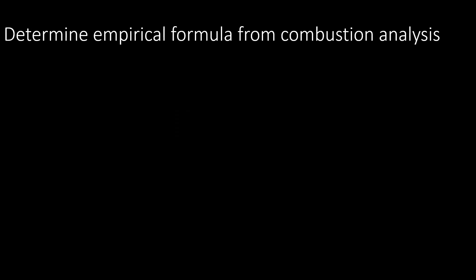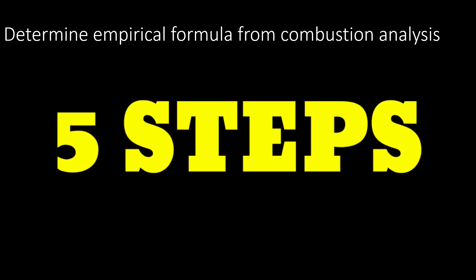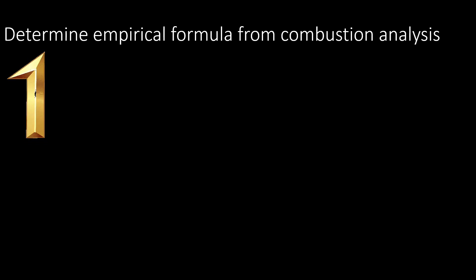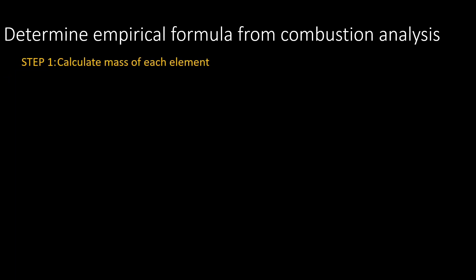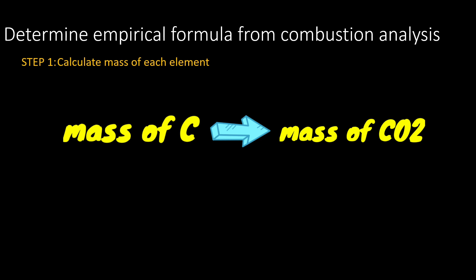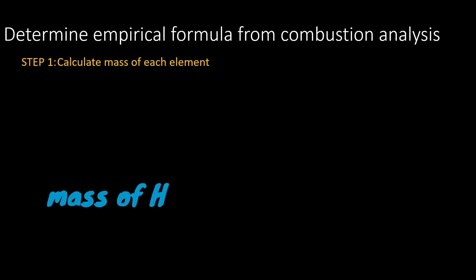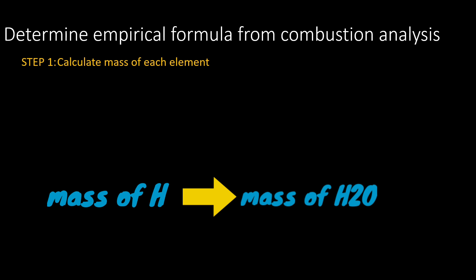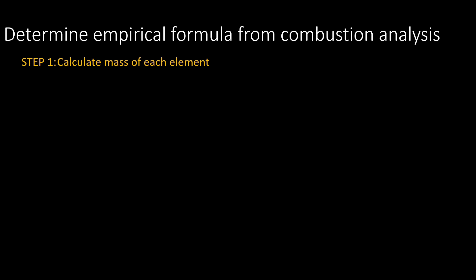To determine the empirical formula using combustion analysis, there are only five steps to follow. Step 1: we need to calculate the mass of each element. For combustion analysis, the elements usually consist of carbon, hydrogen, and sometimes another element. The mass of carbon is determined from carbon dioxide, and the mass of hydrogen is determined from the mass of water. I will show you later how to determine the mass of a third element if one is present in the compound.